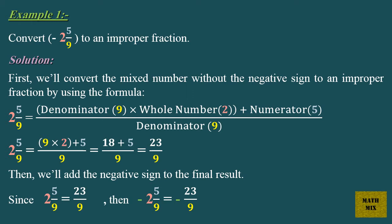Then we'll add the negative sign to the final result. Since 2 and 5 ninths equals 23 over 9, then minus 2 and 5 ninths equals minus 23 over 9.